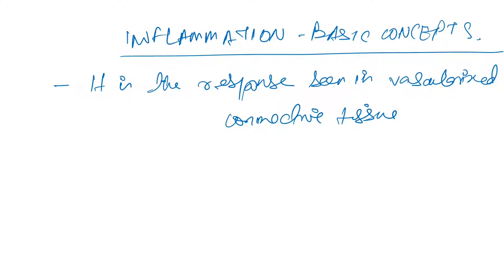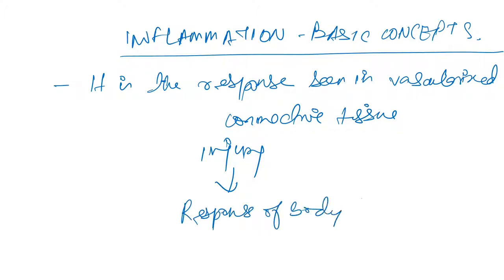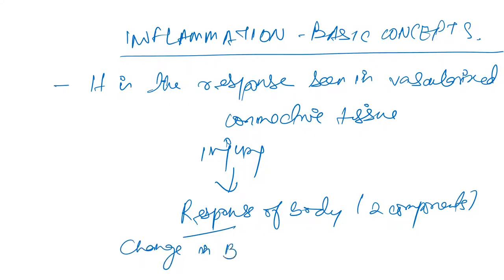Vascularized means blood-containing vessels and connective tissue. So inflammation is the response seen in vascularized connective tissue. Whenever there is an injury, the response of the body can be divided into two components: one is change in blood vessels and the other is change in cells.